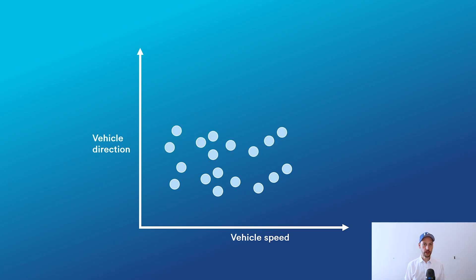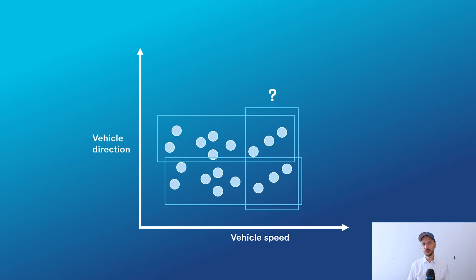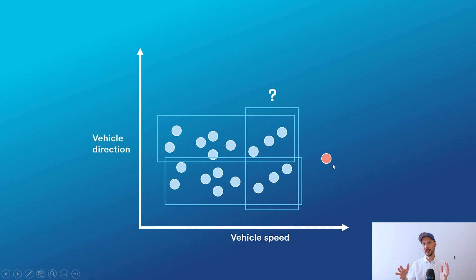We might try to cluster those together and say: this is one cluster and this is another cluster. But wait — how do we know what counts as a cluster? The system cannot really know which ones belong together. And suddenly there's an unusual event over here, and we might say it doesn't fall into any cluster, so let's trigger an alert. But in reality, we're not so sure that this is really so different from the rest. This already becomes hard.